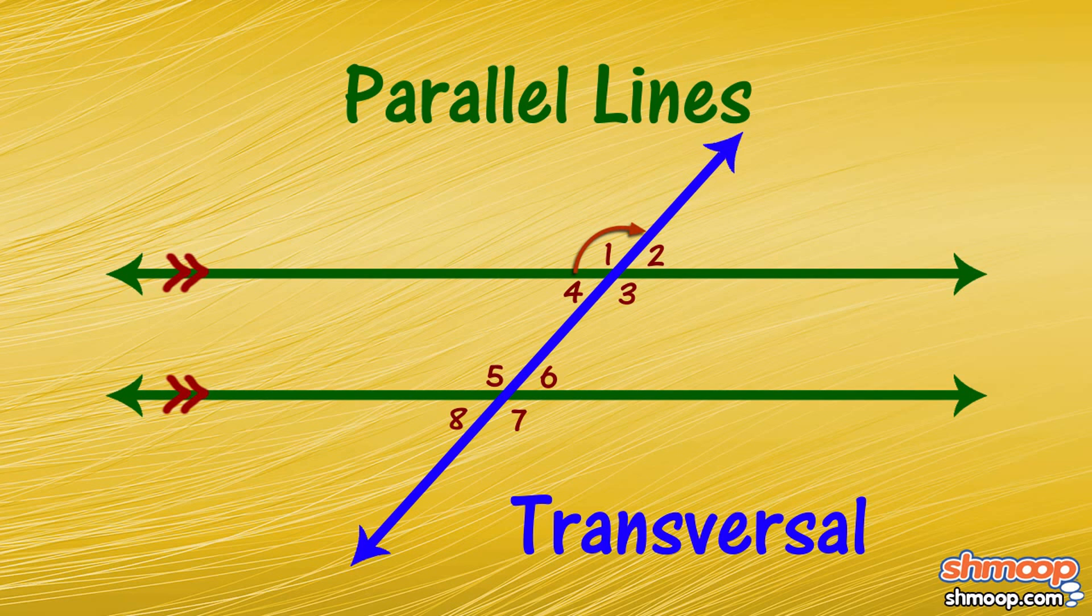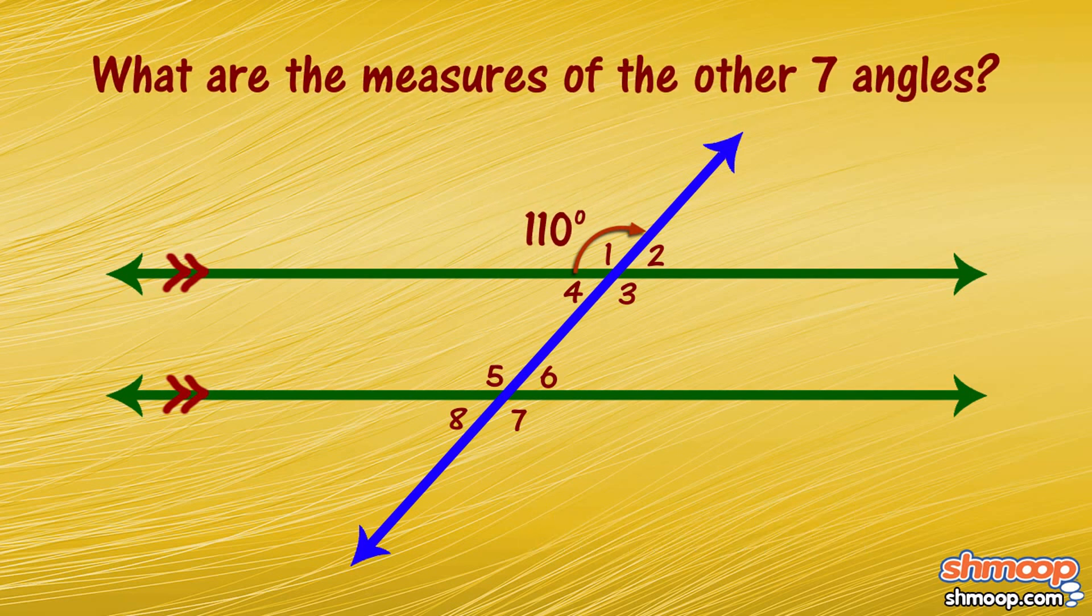If the measure of angle one is 110 degrees, what are the measures of the other seven angles?